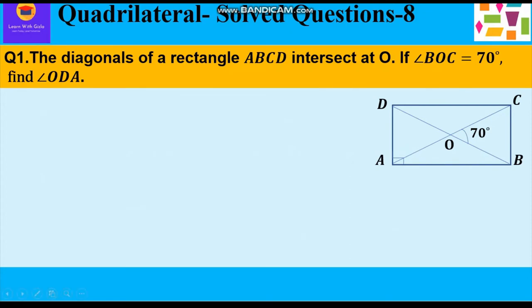Let's start with the first question. The diagonals of a rectangle ABCD intersect at O. If angle BOC is equal to 70 degree, find angle ODA.